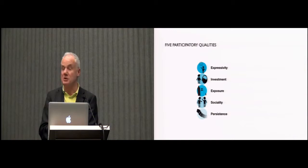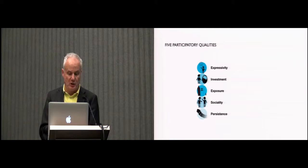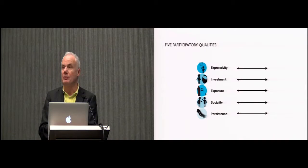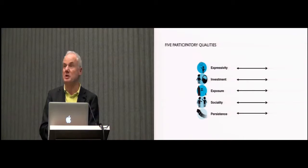This participation gestalt is composed of five qualities: expressivity, investment, exposure, sociality, and persistence. These qualities are not mutually exclusive — they may influence each other and may unfold at the same time during interaction. Remember, we are talking about a gestalt. We have proposed a visualization that indicates how participation is unfolding according to each of these five aspects, ranging from very low to high.